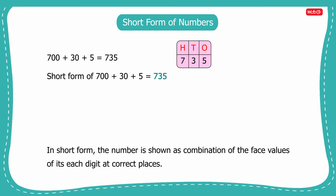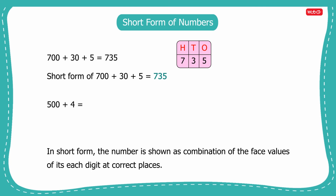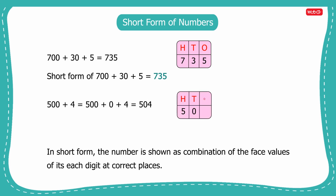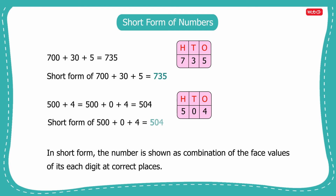Let us take one more example: 500 plus 4, which is equal to 500 plus 0 plus 4. Here we have 5 at hundreds place, 0 at tens place and 4 at ones place. So its short form is 504.